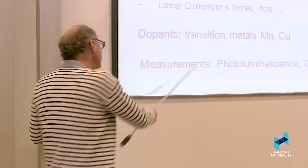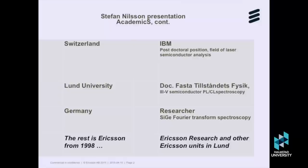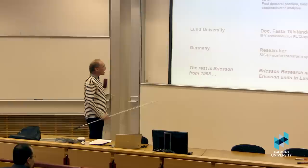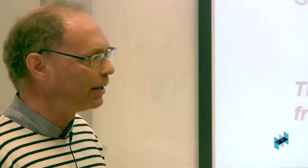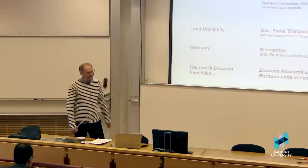To make life even worse, we added some dopants into it: manganese and copper, transition metals from group 3D. Why we did that? Mainly because they are very common impurities, always around. It's a way to track what happens if you have manganese and copper in gallium arsenide-related materials. That was my thesis. Measurement method was photoluminescence. That's four years in one slide, right?